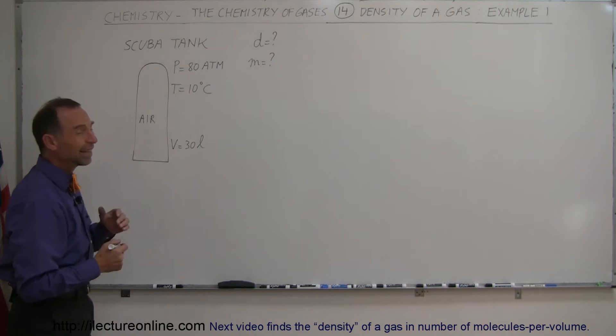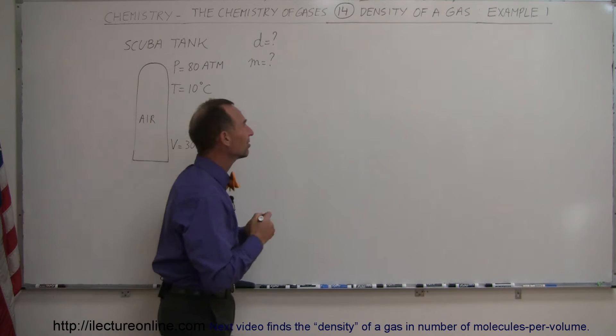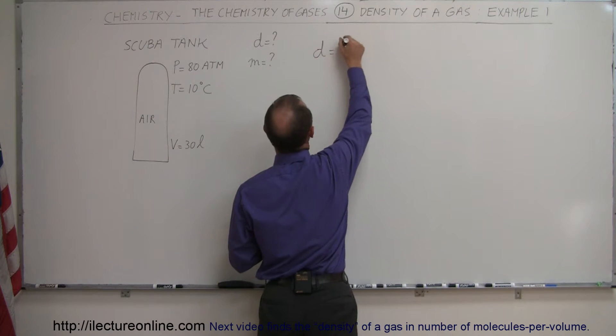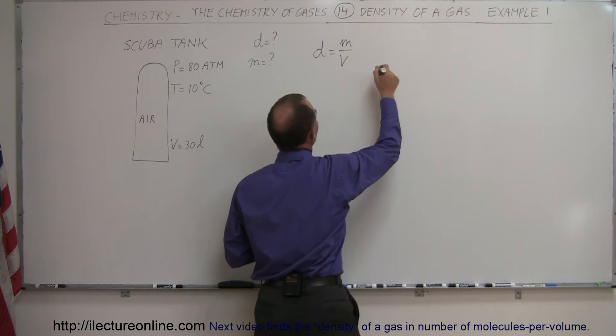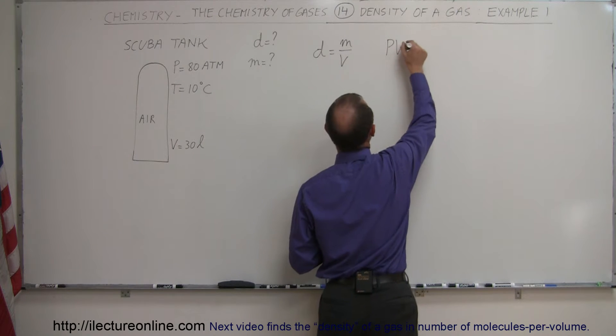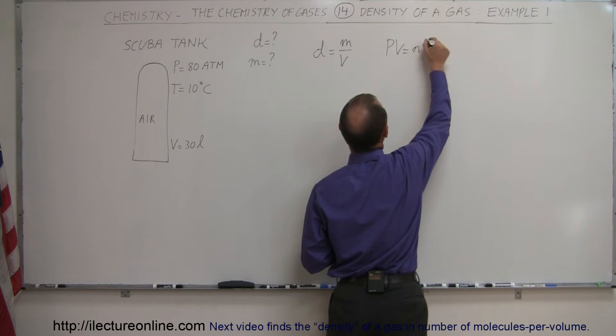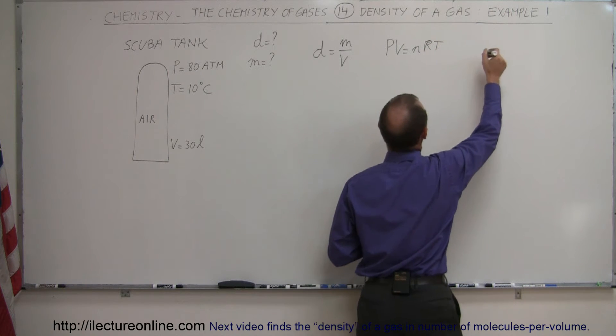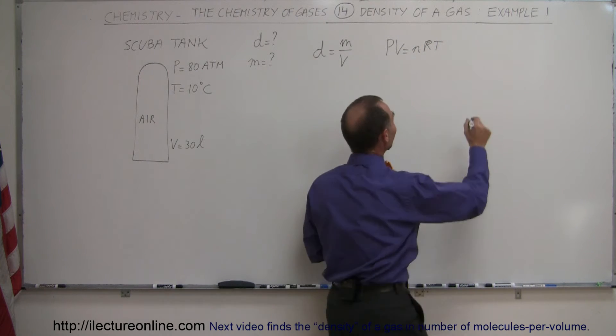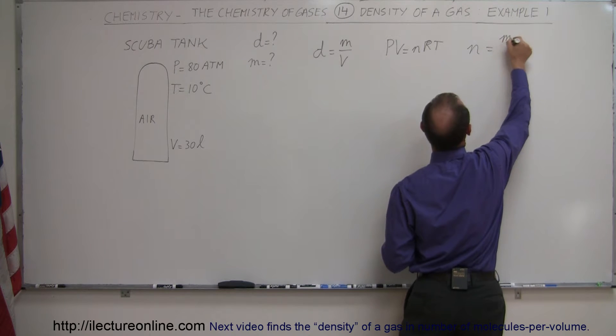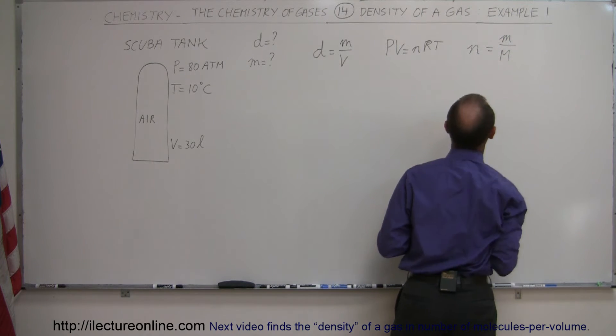Alright, well I always like to start from the basics. I like to say that the definition of density is equal to mass divided by the volume. I also like to start with PV equals NRT, and also the definition of the number of moles of a gas is equal to the mass of the gas divided by the molar mass.